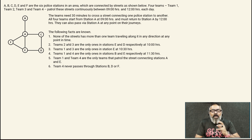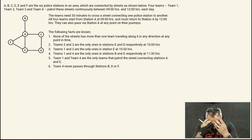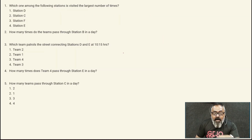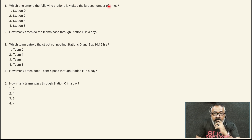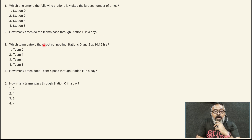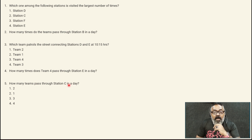This seems like it's not a very complicated set, but you will be thinking about figuring out the complete story of each team and how to navigate this. Layouting is important here, but we also need to identify what each question is asking. Question 1 asks which station is visited the largest number of times — there is a definite answer. Others ask how many times teams pass station B, which team patrols D-E at 10:15, how many times team 4 passes station E, and how many teams pass station C.